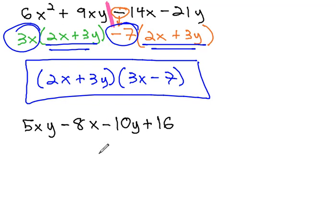When factoring by grouping on 5xy minus 8x minus 10y plus 16, we split down the middle right after the second term. On the left side, we see a GCF of only x. Factoring out the x, we're left with 5y minus 8.